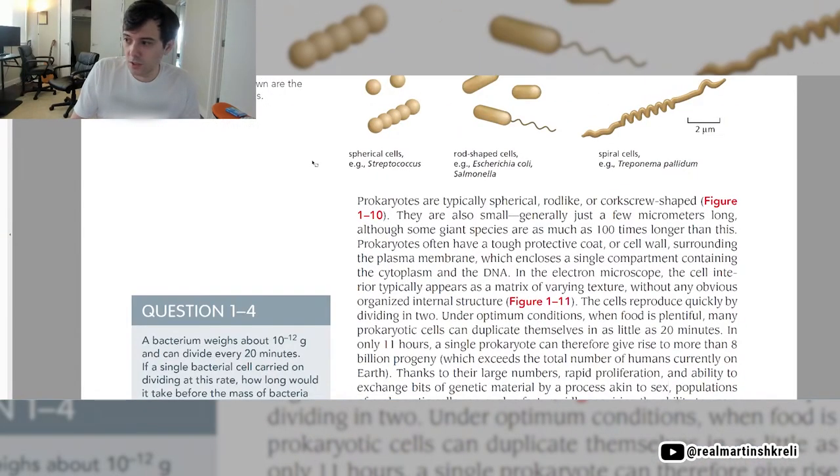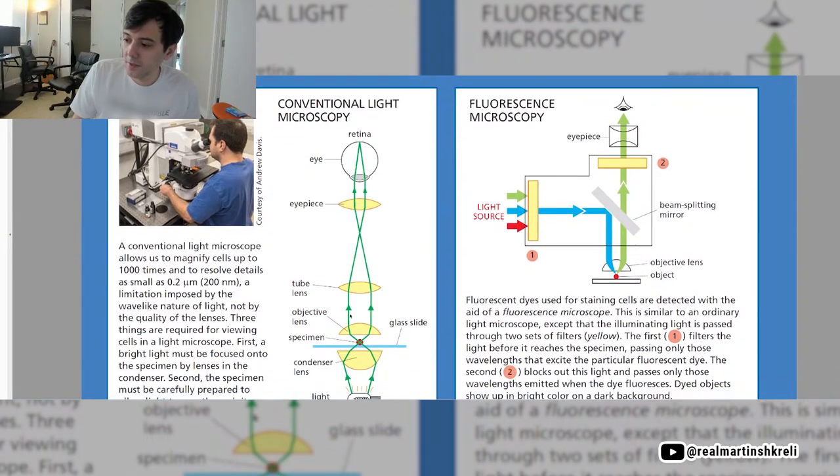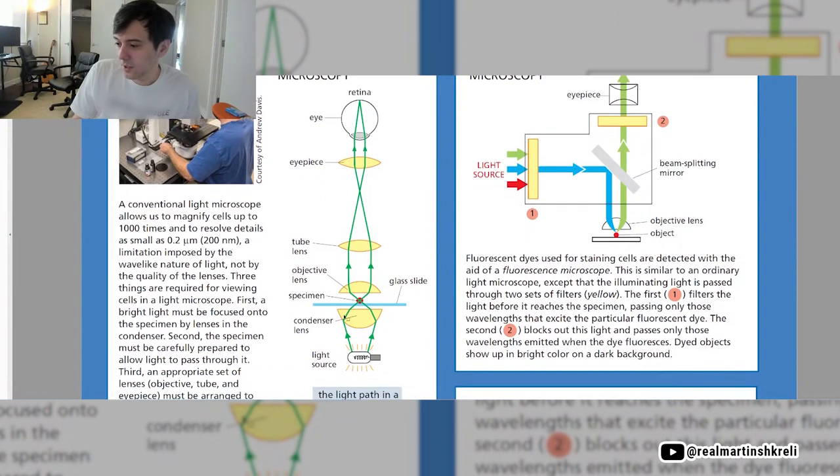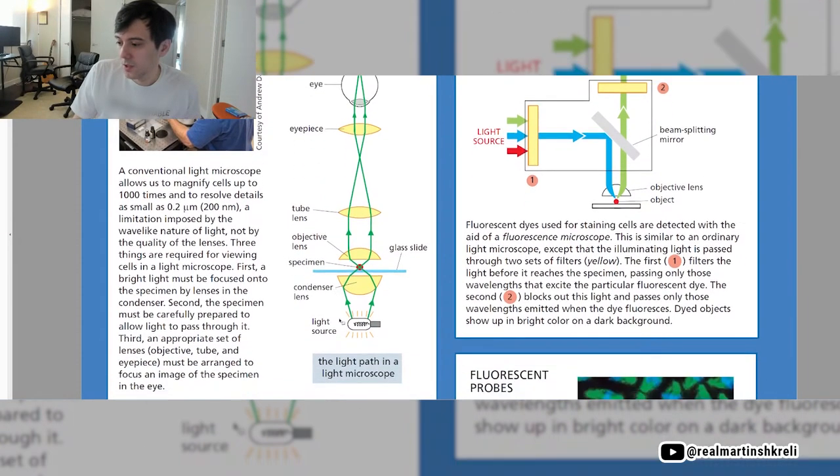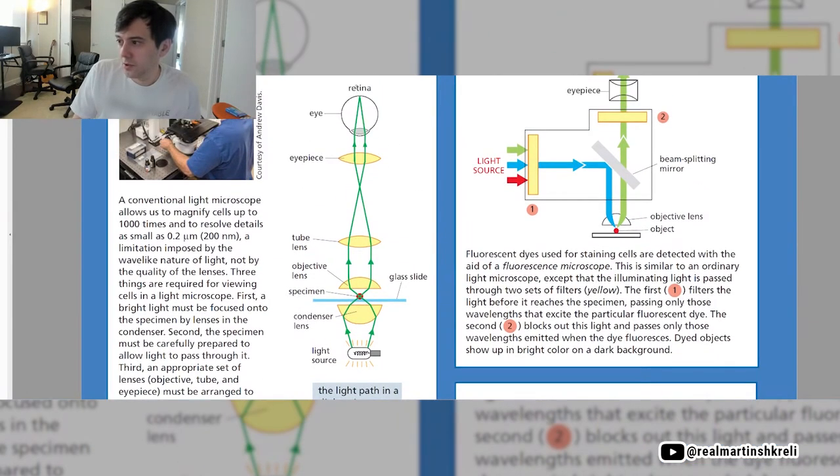Let's look at these pages we skipped. This is panel 1-1. I'm talking about microscopy, the conventional light microscopy. We have our retina, this is our eye, an eyepiece, the tube lens, an objective lens. Here's the specimen that we prepared on a glass slide, a condenser lens and a light source. The conventional light microscope allows us to magnify cells up to a thousand times and resolve details as small as 200 nanometers, a limitation imposed by the wave-like nature of light, not by the quality of the lenses.